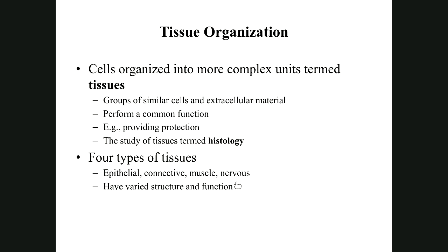Nervous tissue produces and distributes action potentials. You may have heard the terms 'nervous impulses' or 'electrical signals,' but the proper term is action potentials, abbreviated AP. Nervous tissue will come up again in chapters 12 through 16, and muscle tissue gets its own dedicated chapter — chapter 10 covers skeletal muscles.